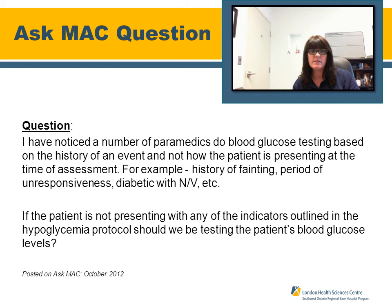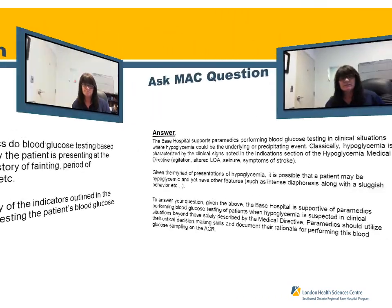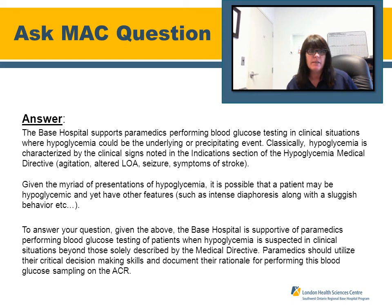Ask Mac: A question was asked in October 2012 regarding blood glucose levels. The question was: I've noticed a number of paramedics do blood glucose testing based on the history of an event and not how the patient is presenting at the time of assessment — for example, history of fainting, period of unresponsiveness, diabetic with nausea and vomiting, etc. If the patient is not presenting with any of the indicators outlined in the hypoglycemic protocol, should we be testing the blood glucose of this patient? The base hospital supports paramedics performing blood glucose testing in clinical situations where hypoglycemia could be the underlying or precipitating event.